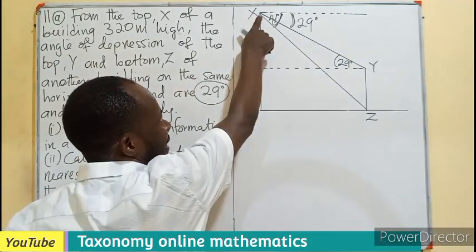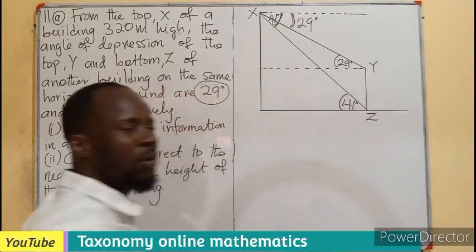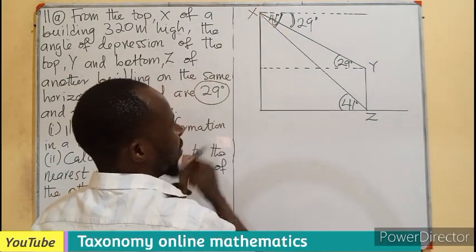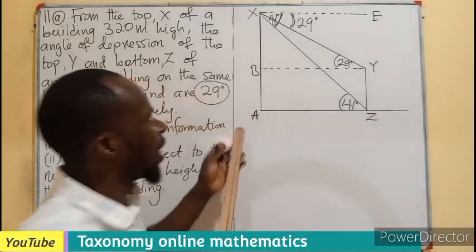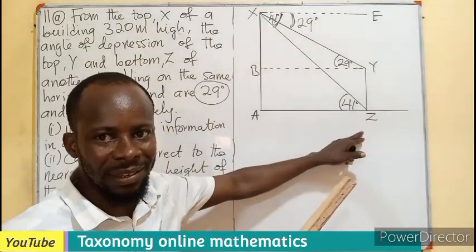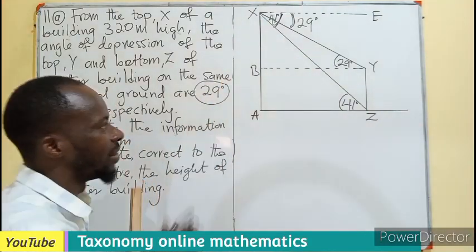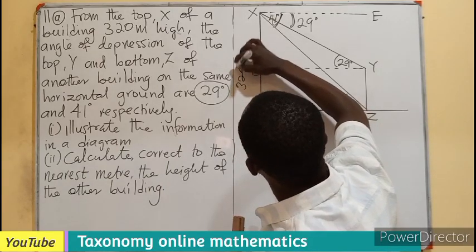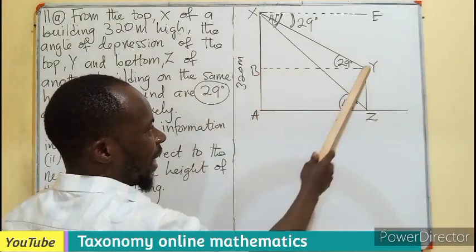This angle here is alternate to the angle there, and this is also a transversal with the horizontal line, so it will also be 41 degrees. From plane geometry, if XE is parallel to BY, and XE is also parallel to AZ, these are three parallel lines which can produce alternate angles. We are aware that from X all the way to A is given as 320 meters. From here to here is the same as YZ, which is the height of the building we are asked to find.